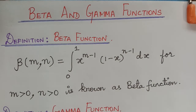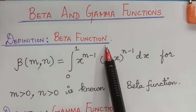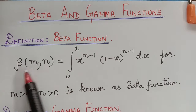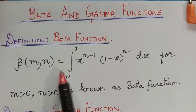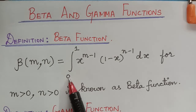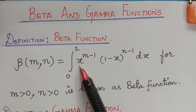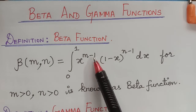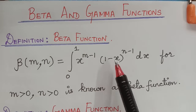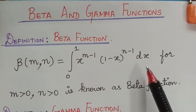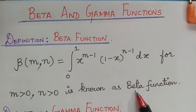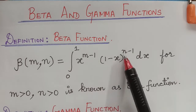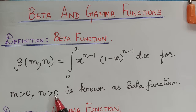The first definition we will be learning is the beta function. The beta function, denoted by beta of m, n, is equal to the integral from 0 to 1 of x to the power m minus 1, multiplied with 1 minus x to the power n minus 1, dx. This integral is known as the beta function, and the values of m and n are always positive, that is, greater than 0.